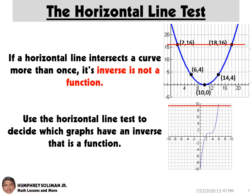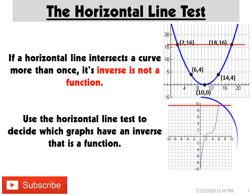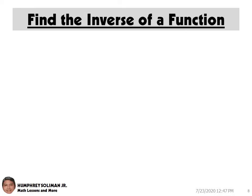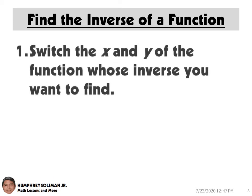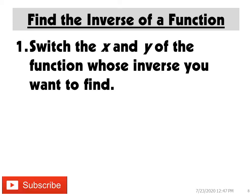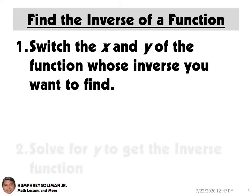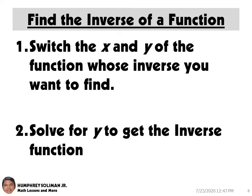How do we check if the inverse of the relation would be a function or just a simple relation? If a horizontal line intersects a curve more than once, its inverse is not a function. Use the horizontal line test to decide which graphs have an inverse that is a function. Now it's time to solve for the inverse of a function: Step 1, switch the x and y variables; Step 2, solve for the y variable to get the inverse.